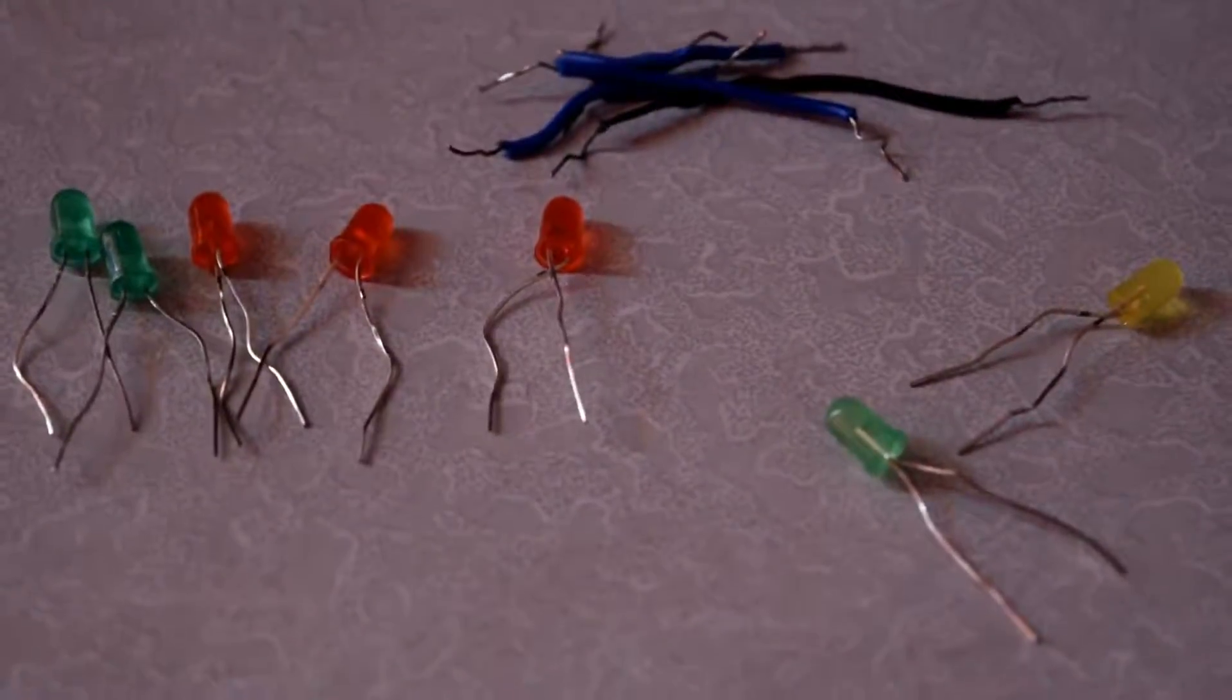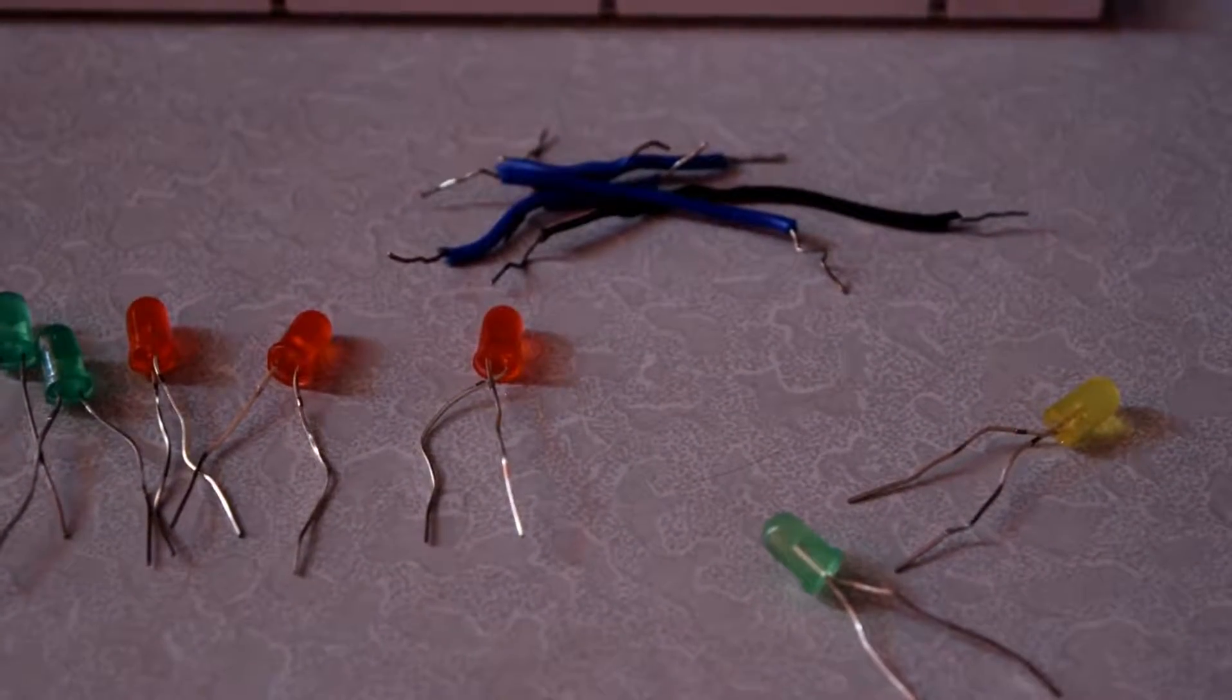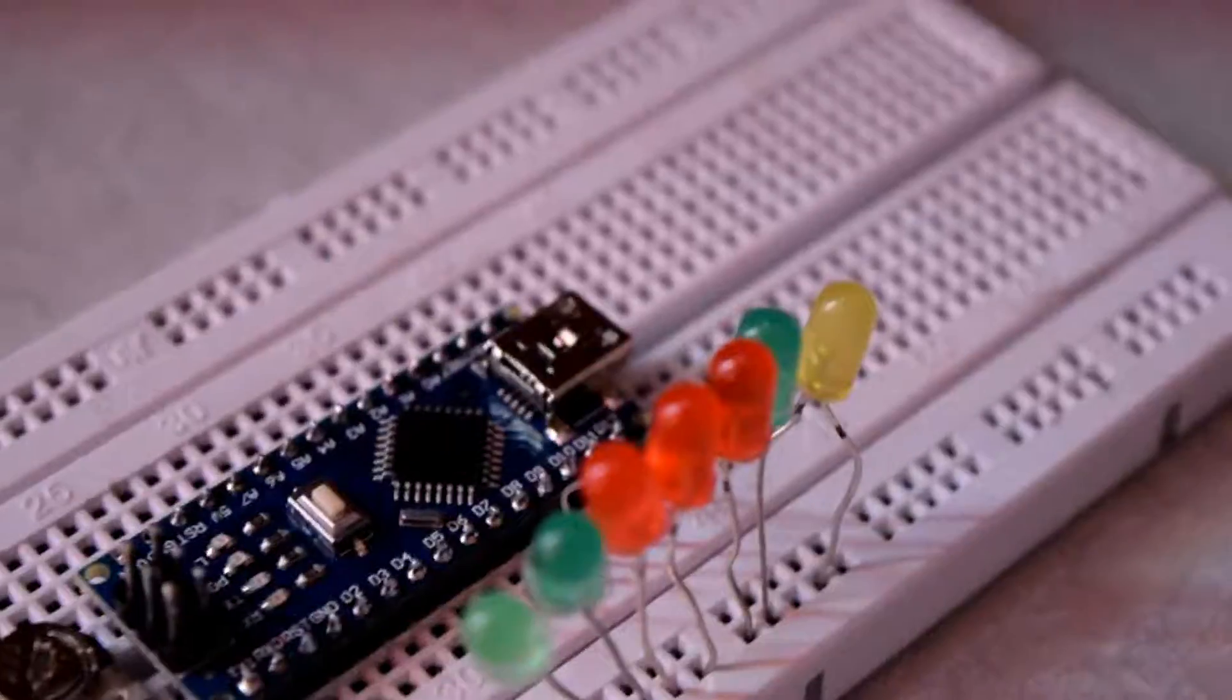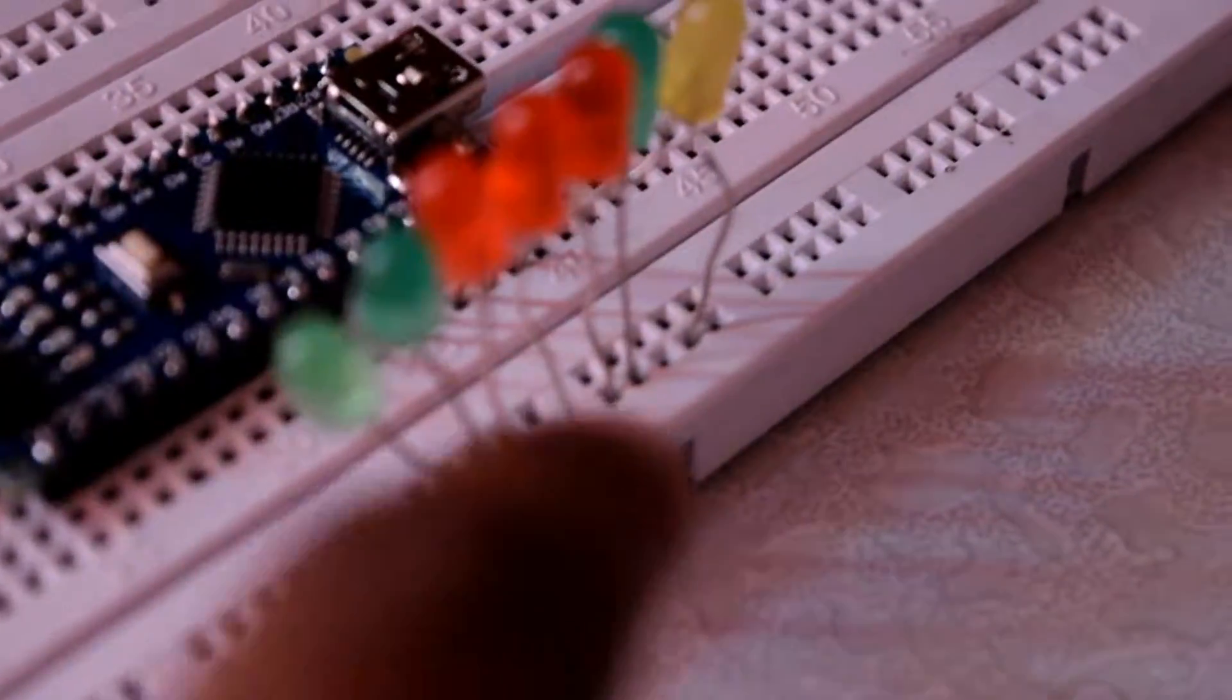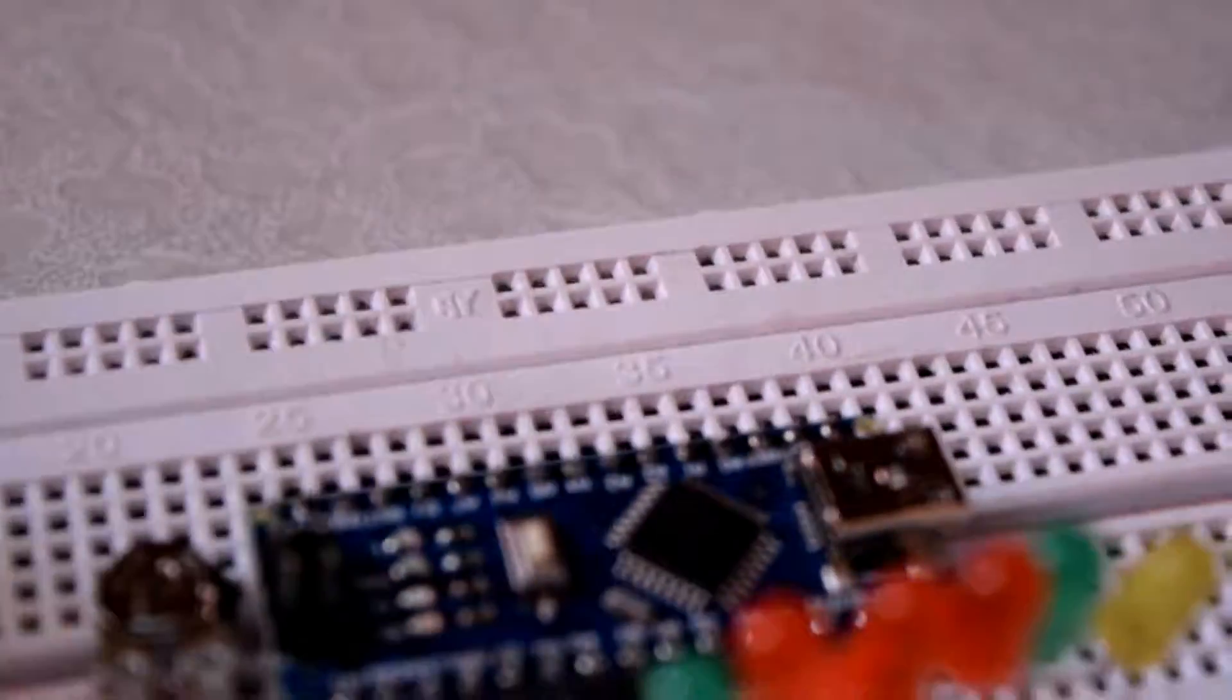LED anodes, which are the positive terminals, should be connected to their respective outputs. All the negative terminals should be connected together, and the positive to their respective pins. I have chosen pins 6, 7, 8, 9, 10, and 12.